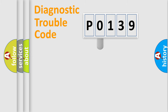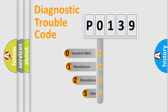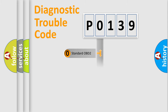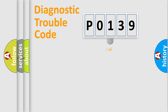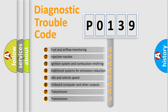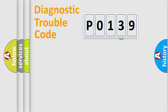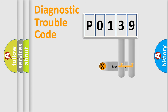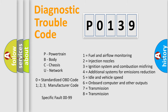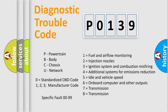This distribution is defined in the first character of the code. If the second character is expressed as zero, it is a standardized error. In the case of numbers 1, 2, or 3, it is a more specific car-specific error. The third character specifies a subset of errors. The distribution shown is valid only for the standardized DTC code, and only the last two characters define the specific fault of the group.